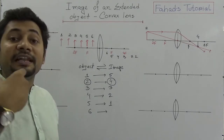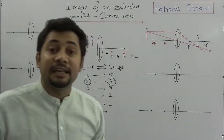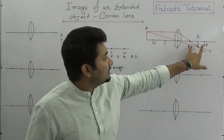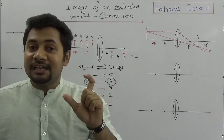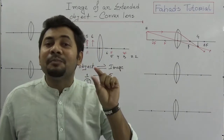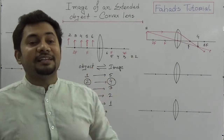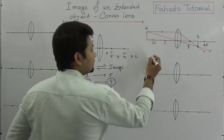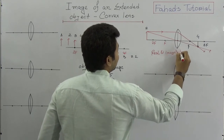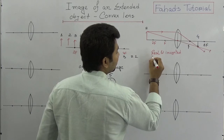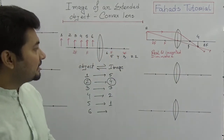When describing an image we consider three things: position, size, and nature. For position 2 (object beyond 2F): the position of the image is between F and 2F; the size is diminished — it is smaller than the object; and the nature is real and inverted.